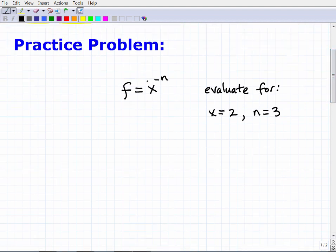Okay, so here I have a simple formula. In mathematics speak, we would call this a function. So let's say f is equal to x to the negative n power. So what I want you to do is to evaluate, which means plug in these values for the respective variables. So I want you to evaluate, figure out what this is equal to when we let x equal to 2 and n is equal to 3.